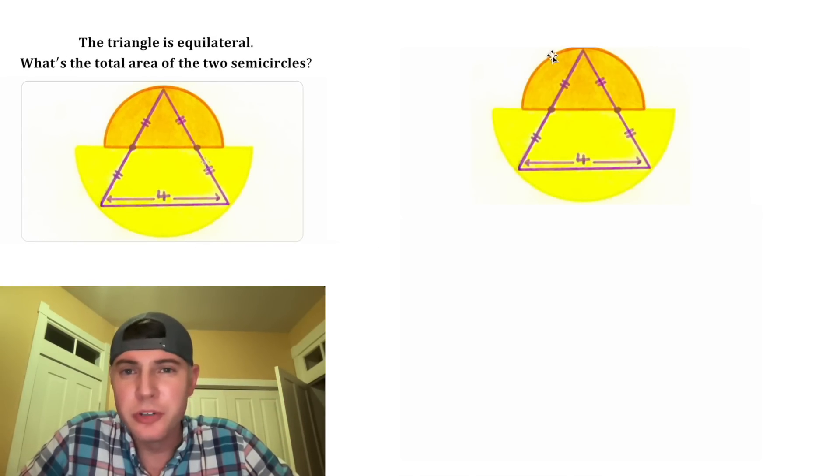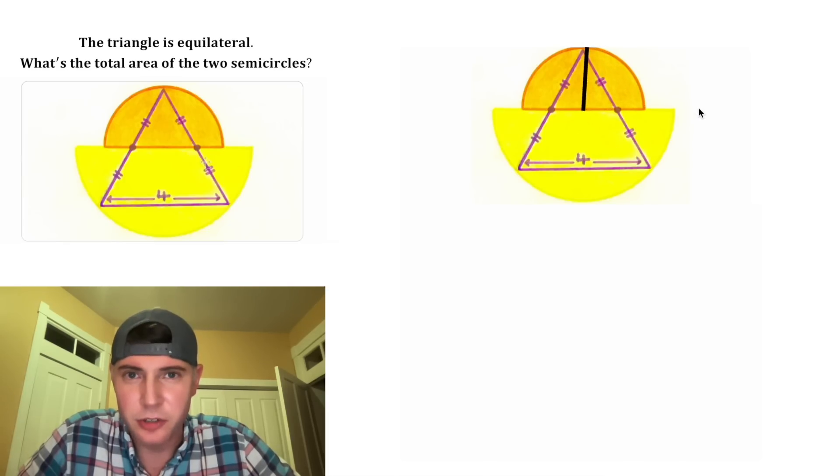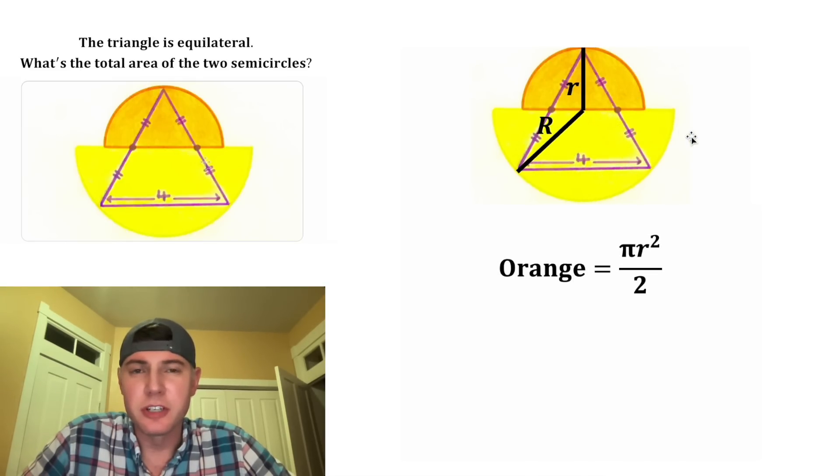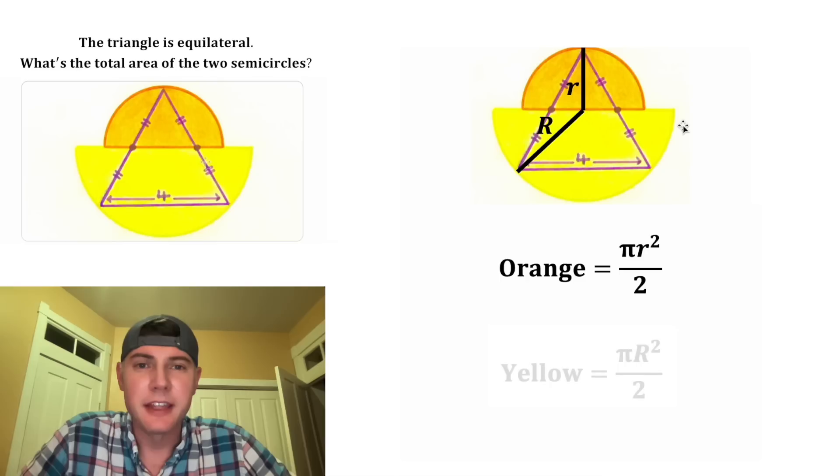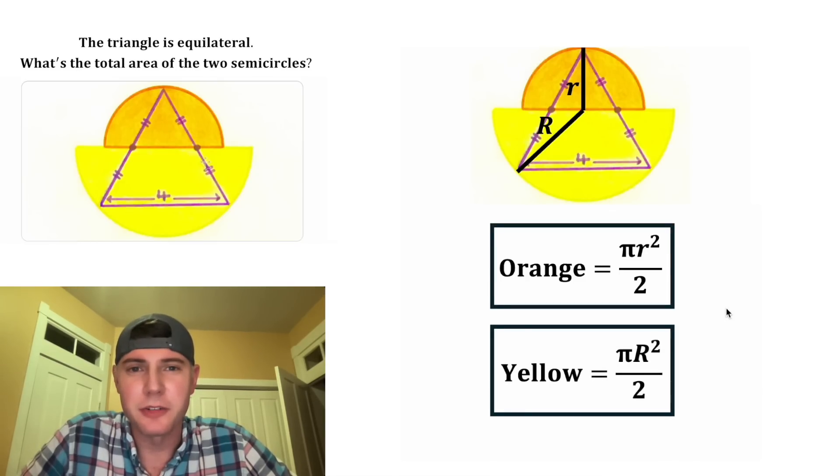So we're trying to find the area of two different sized semicircles. Each of these will have a different radius. We'll call the radius of the little semicircle little r, and the radius of the big semicircle big R. The area of the orange semicircle is πr²/2, because it's half of a circle. And the area of the yellow semicircle will be πR²/2. These look important, let's put a box around them.